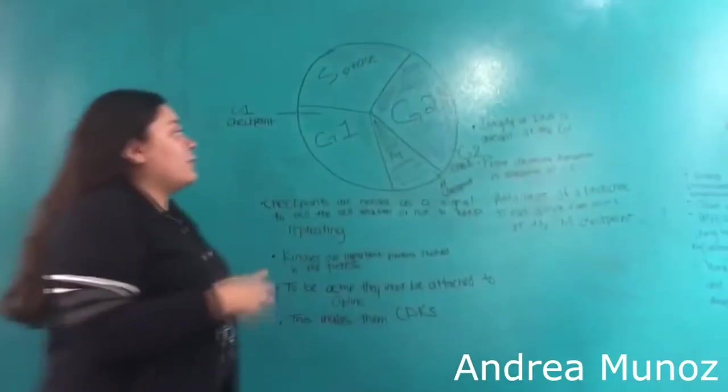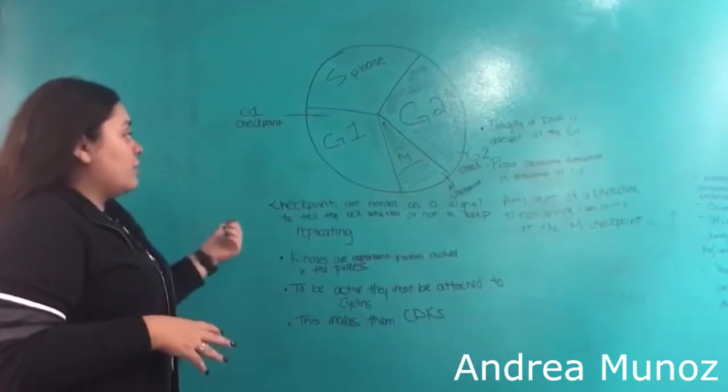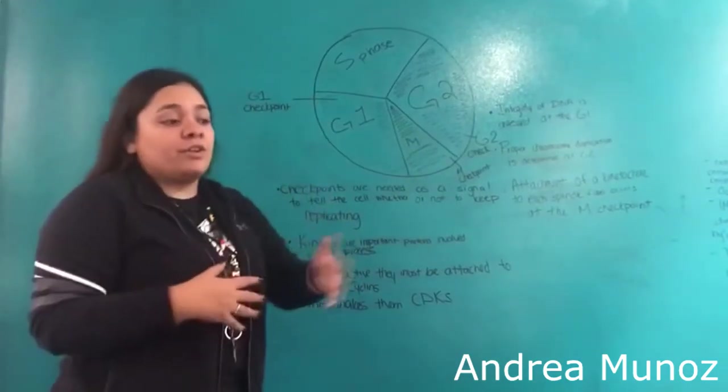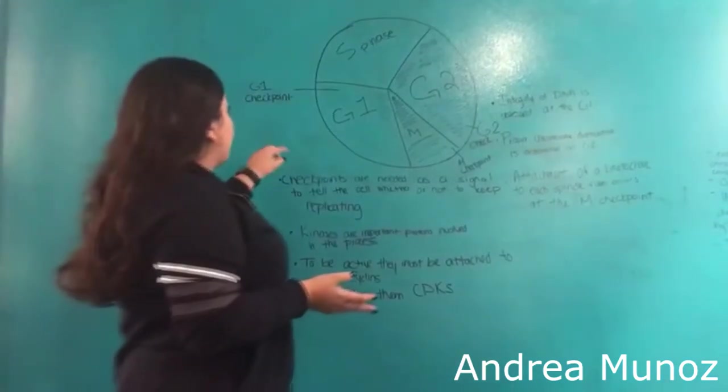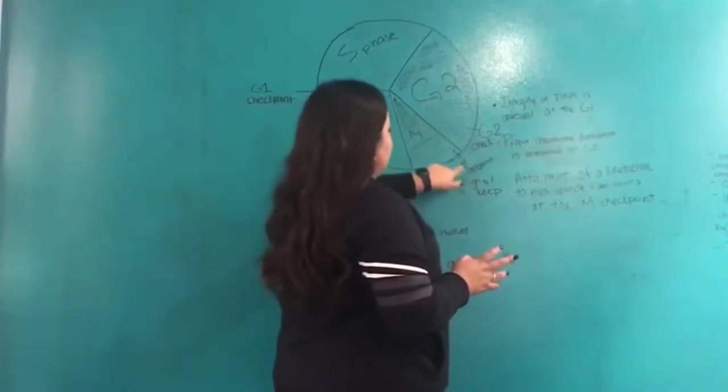In the cell cycle, there are three very important checkpoints. These checkpoints are needed because they act as signals in order to tell the cell whether or not to keep dividing. These checkpoints are the G1, the G2, and the M.